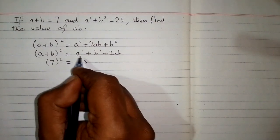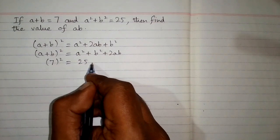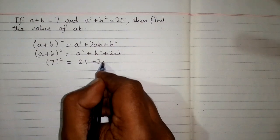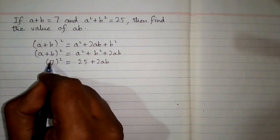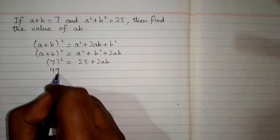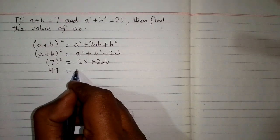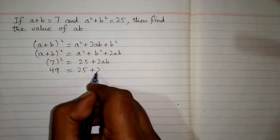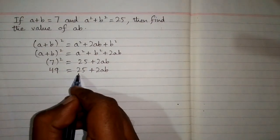Then plus 2ab. Now square of 7 is 49, so we have 49 = 25 + 2ab. Now we can take this 25 on this side of equation.